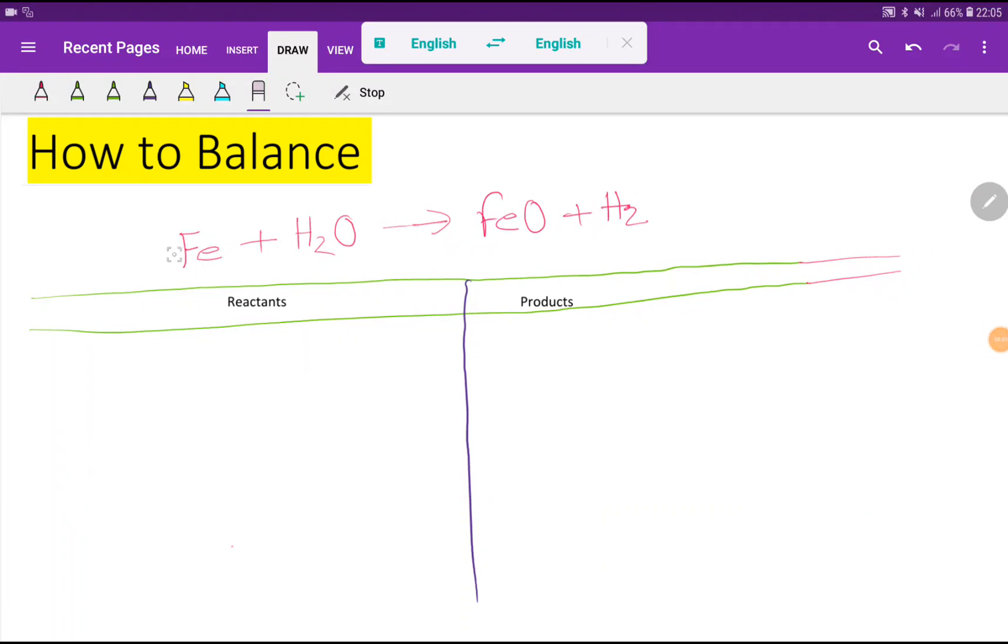Welcome to the channel. Today we are going to balance this reaction: iron plus water yields ferrous oxide plus hydrogen.